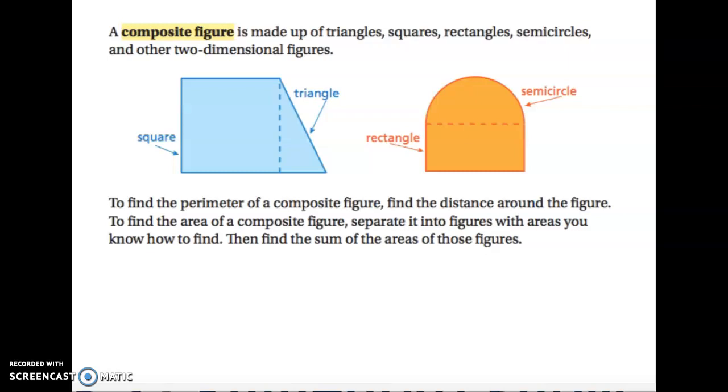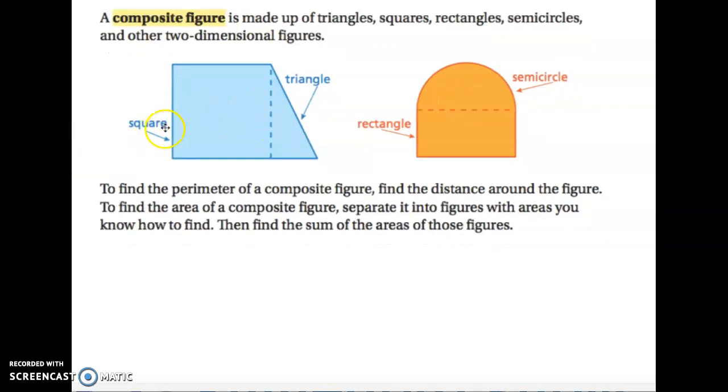They are figures that are made up of triangles, squares, rectangles, semicircles, and other two-dimensional figures. So basically a composite figure is when you put two or more shapes together. Here is an example: we have a square and a triangle put together, and over here a rectangle and a semicircle put together.